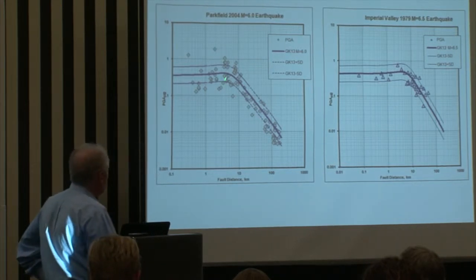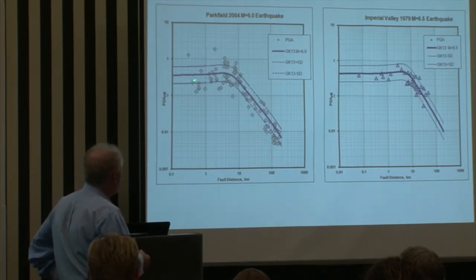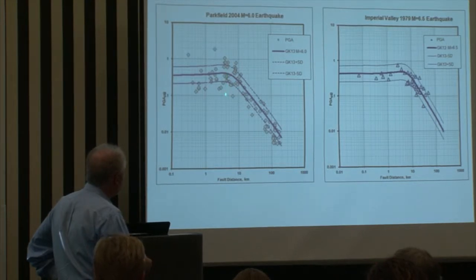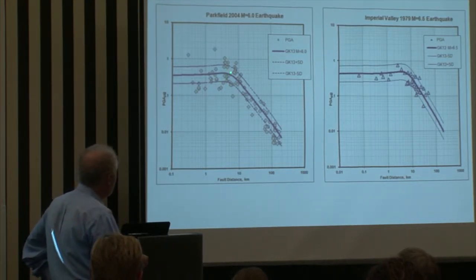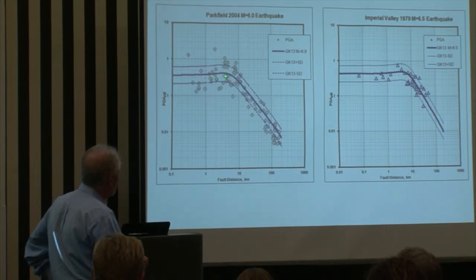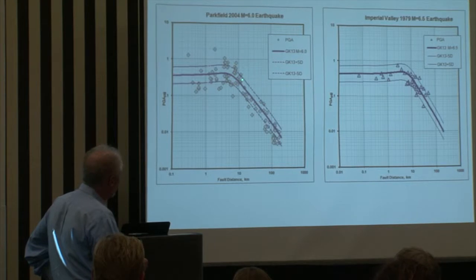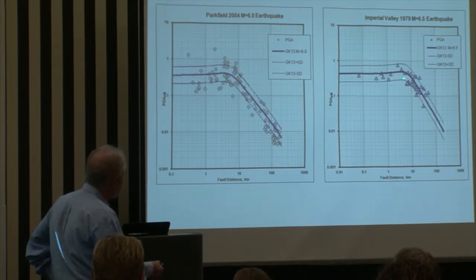Our model tries to be as physical as possible. This is why this flat area is proportional to magnitude, and the larger the magnitude, the farther is this corner distance or slope.